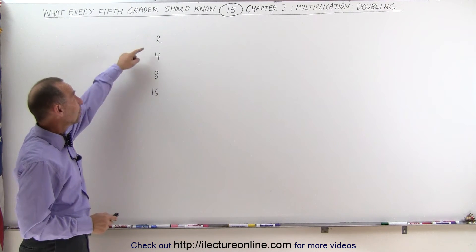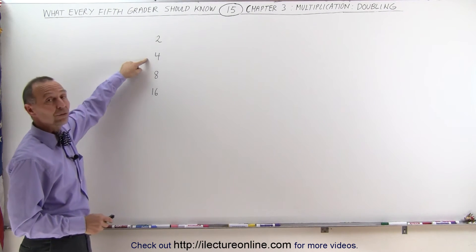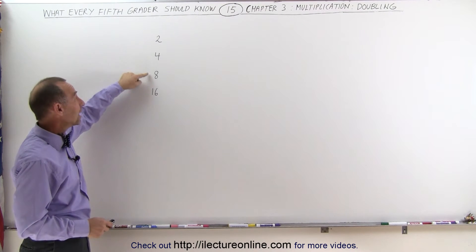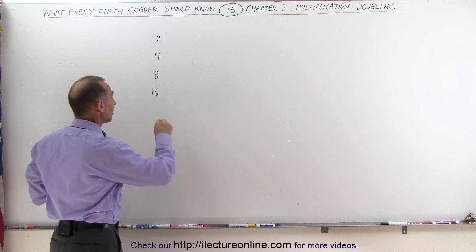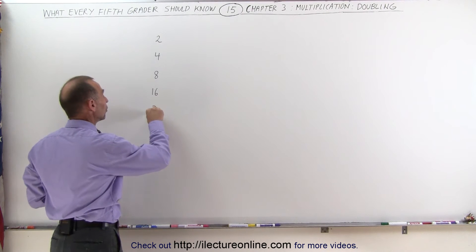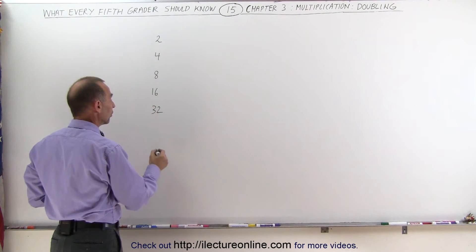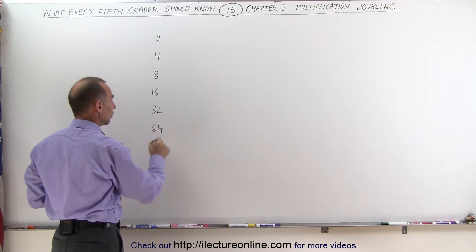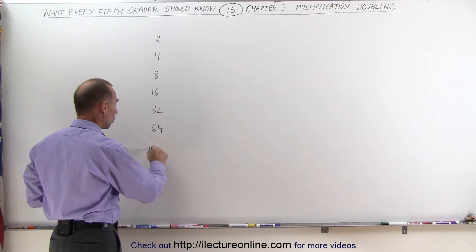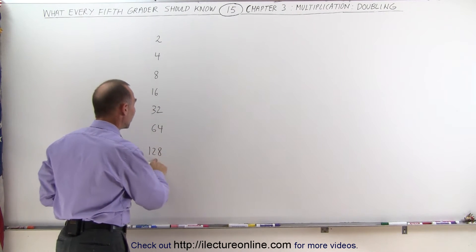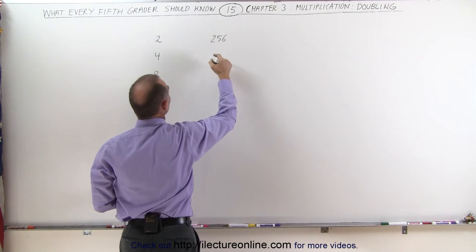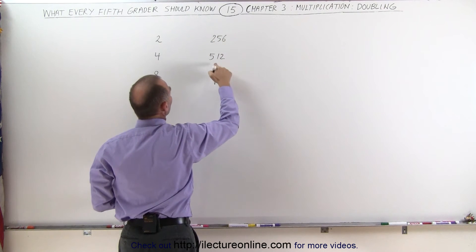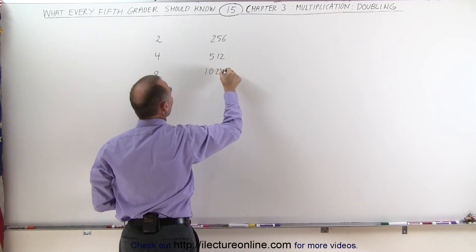But what happens when you double the number 2? You get 4. Double that, you get 8. Double 8, you get 16. Double 16, you get 32. Double 32, you get 64. Double 64, you get 128. Double 128, you get 256. Double 256, you get 512. Double 512, you get 1024.